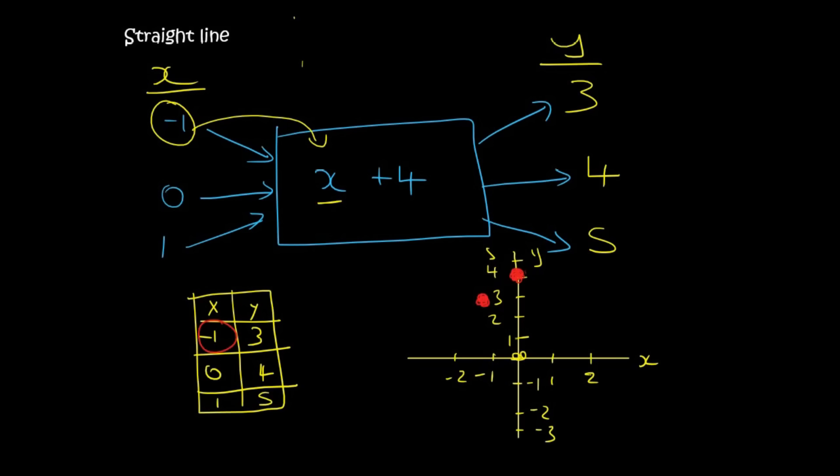And then when x is 1, which is here, then y is 5. So that's somewhere over here. Now if we had to connect those, look what we formed, a straight line. So what's incredible is that whenever you have something like this, it will always make a straight line.